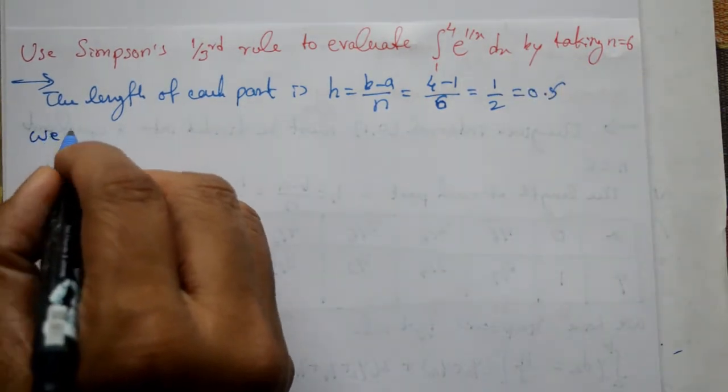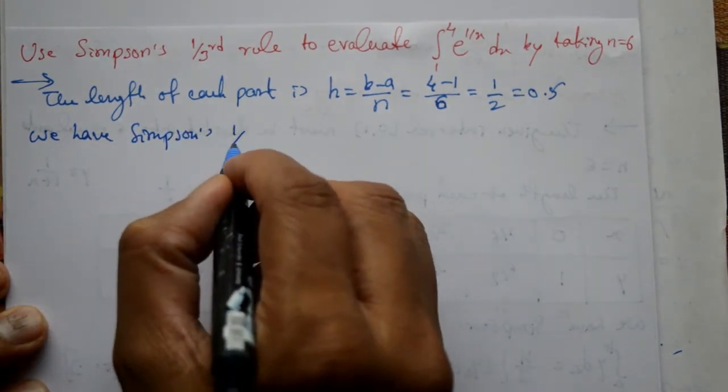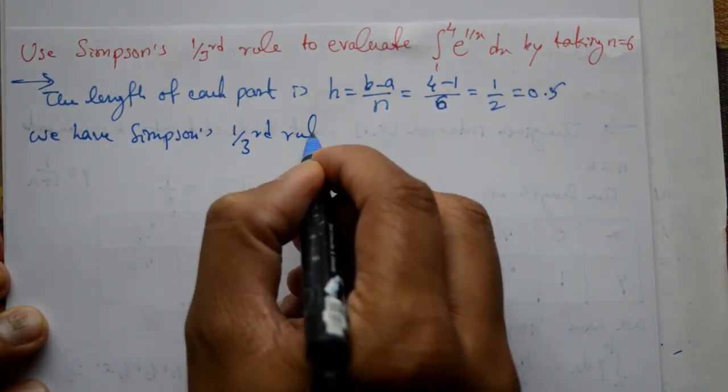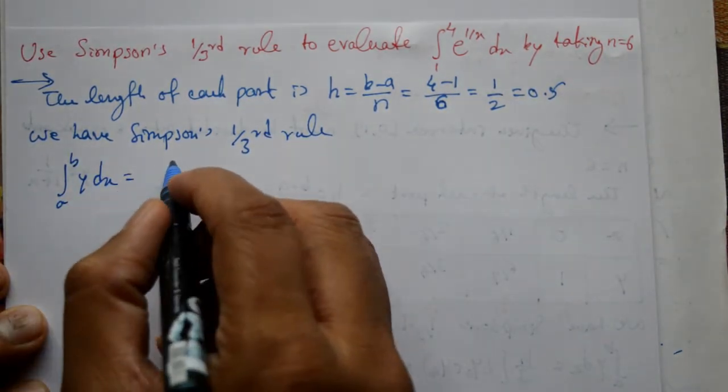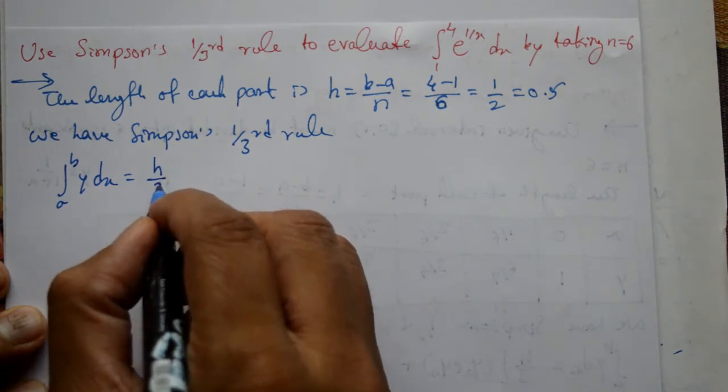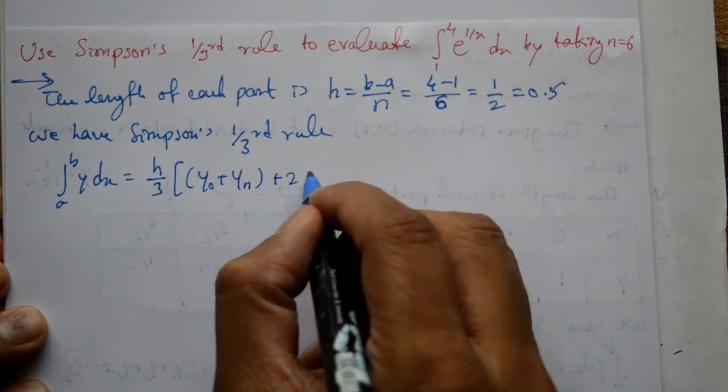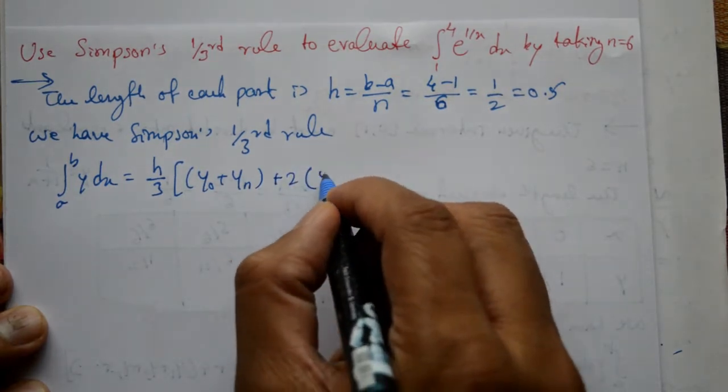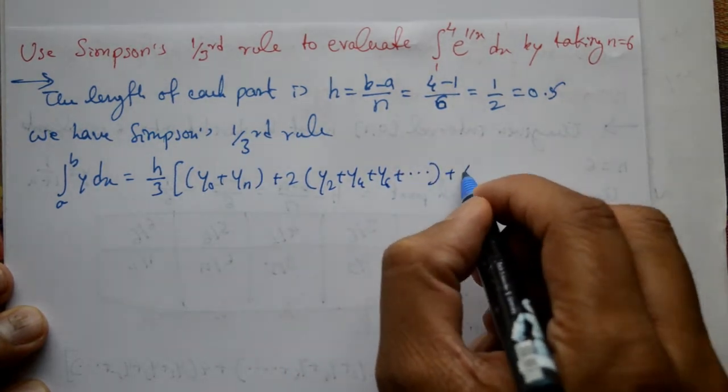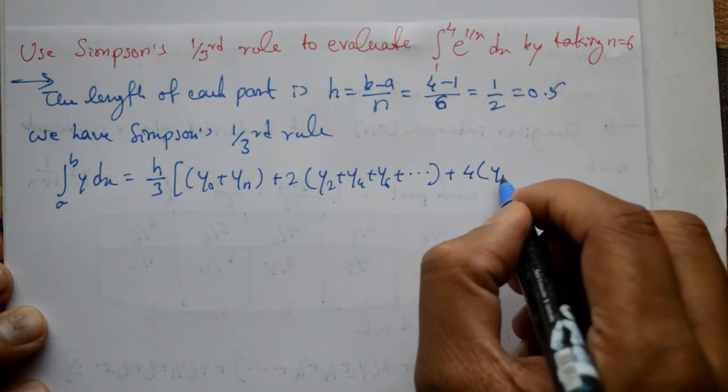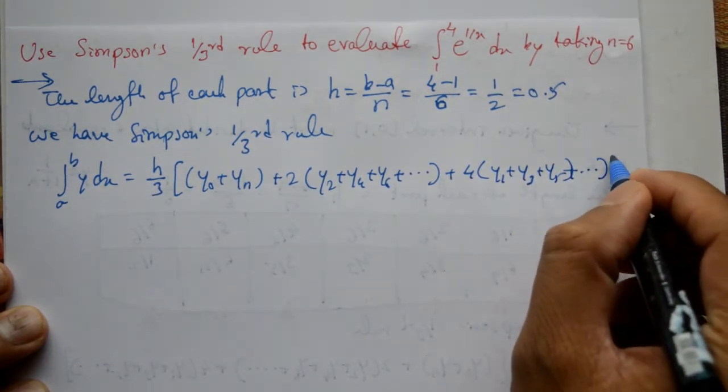Now we have Simpson one-third rule. So formula hai, so integration of a to b, y dx is equal to h by 3 into first value plus last value, y naught plus yn, plus 2 into even number, y2 plus y4 plus y6 is thara lena hai, plus 4 into odd number, so y1 plus y3 plus y5 lena hai.